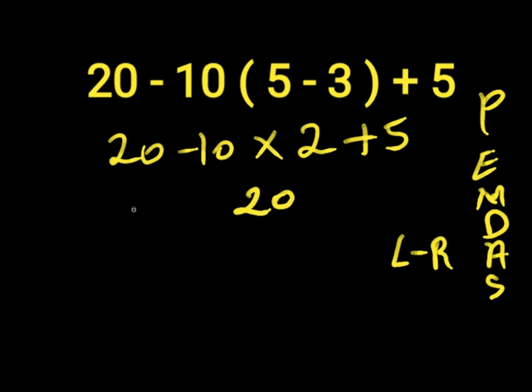Then we have 20 minus 20 plus 5. So first of all we solve our subtraction because subtraction and addition have equal priorities, so we work from our left to our right. So 20 minus 20 will give us 0. Then 0 plus 5 will give us 5. So 5 is the right answer to this expression.